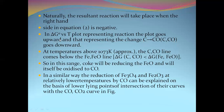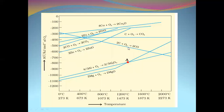The Ellingham diagram is the graphical representation of ΔG° versus temperature in Kelvin. From this diagram, we can identify whether coke acts as a better reducing agent for the reduction of iron oxide.